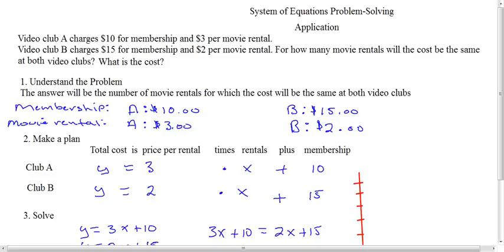Video Club A charges $10 for membership and $3 per movie rental. Video Club B charges $15 for membership and $2 per movie rental. For how many movies will the cost be the same at both video clubs? And what is that cost?